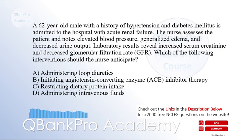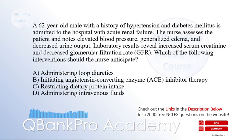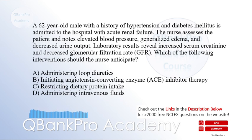A 62-year-old male with a history of hypertension and diabetes mellitus is admitted to the hospital with acute renal failure. The nurse assesses the patient and notes elevated blood pressure, generalized edema, and decreased urine output. Laboratory results reveal increased serum creatinine and decreased glomerular filtration rate, GFR. Which of the following interventions should the nurse anticipate?